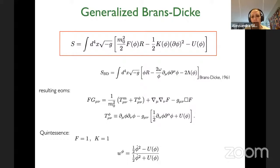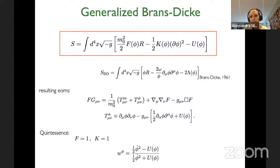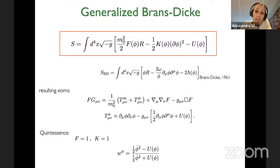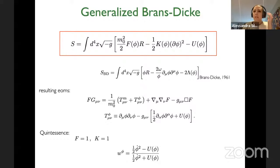The omega parameter is the famous Brans-Dicke parameter. In the next lecture, I will show how one can reformulate the f(R) action in terms of a Brans-Dicke one — in particular a Brans-Dicke theory with omega_BD equals zero. The most general expression for scalar-tensor theories has some general non-minimal coupling, a standard kinetic term with a possible non-trivial function of phi in front — which can be reabsorbed in a redefinition of the scalar field — so in the end we really have two free functions: the non-minimal coupling and a potential for the scalar field.